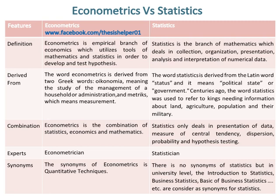The word econometrics is derived from two Greek words: 'economia,' meaning the study of the management of a household or administration, and 'metrics,' which means measurement. The word statistics is derived from the Latin word 'status,' meaning political state or government. Centuries ago, statistics was used to refer to kings needing information about land, agriculture, population, and their military.